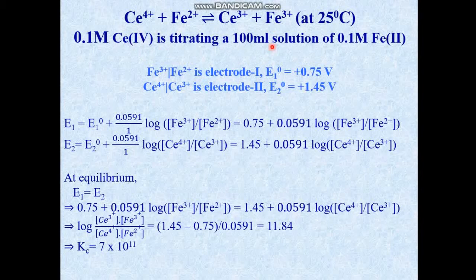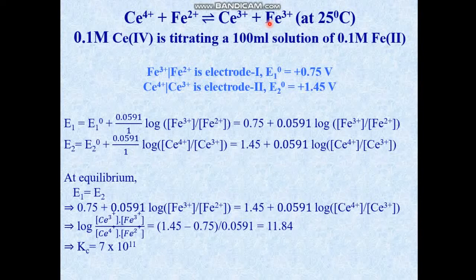This is a redox titration reaction. In this redox titration, 0.1 M cerium four-plus is being added from a burette to a 0.1 M ferrous solution, and this reaction as a whole occurs. To find the exact electrode potential during the reaction, we apply the Nernst equation to both systems.